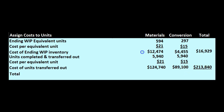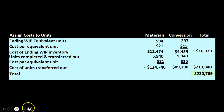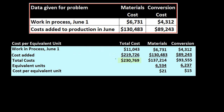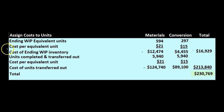This $16,929 is the ending work in process in dollars for materials and conversion. The $213,840 is the amount for units completed and transferred out. Adding those together gives us $230,769, which ties out to the total costs we needed to account for. We used the cost per equivalent unit to split the total cost between ending work in process and units transferred out — and this serves as our check figure.